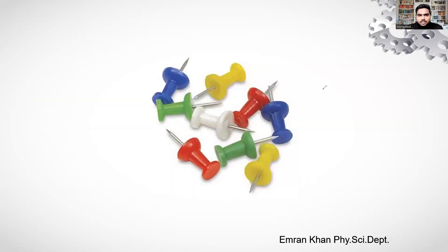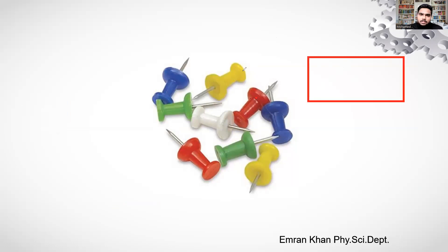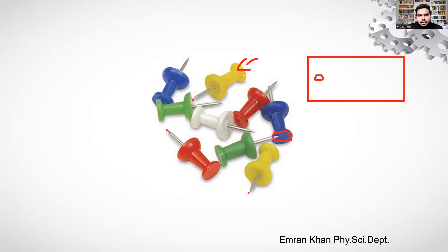You would have used a thumbpin in school. You apply force on the broader end, and the pointed side — which has a very small area — easily goes inside the board. If you tried to apply force from the pointed side inward, the broader area would not penetrate. This is another example of small area producing more pressure.